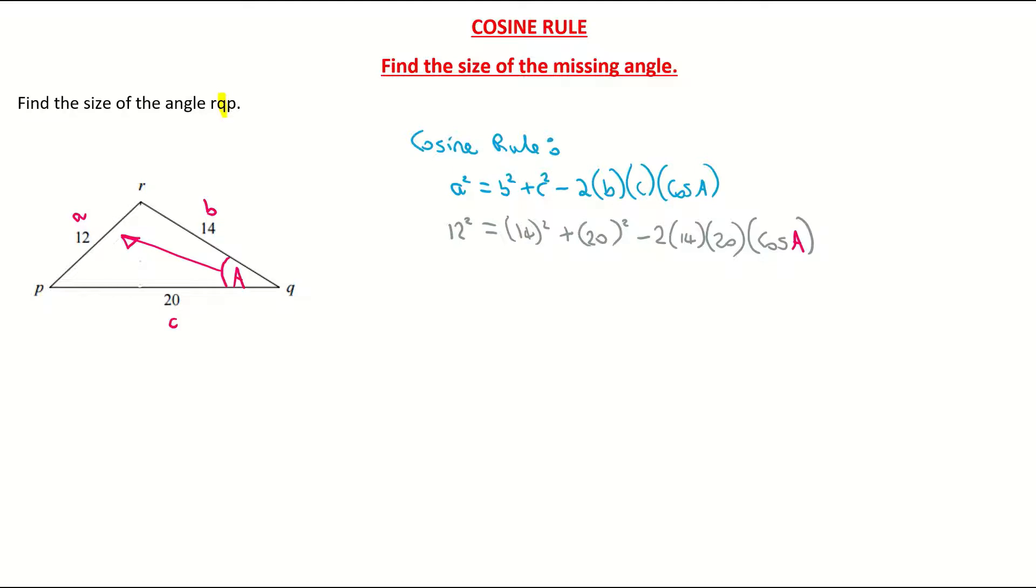I don't know the size of that angle. That's what the question is asking me to solve for. I'm just going to do some maths now. I'm going to do 12 by 12, which is 12², which is giving me 144. I'm then doing 14 by 14, 14² is 196. 20 by 20 is 400. And now I'm going to do 2 multiplied by 14 multiplied by 20, and that is giving me 560, and that is being multiplied by cos of A.